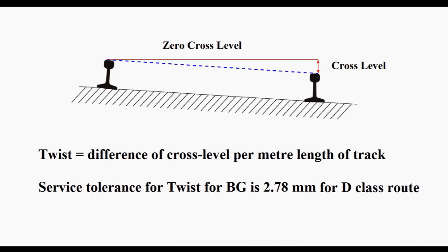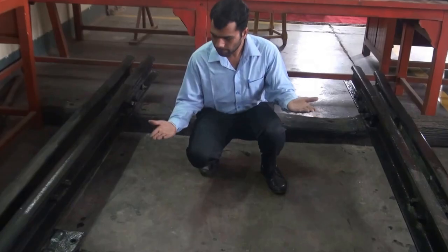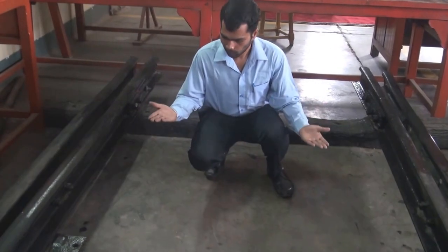Another important parameter related to track is cross level. It is defined as the difference between the elevation of rails.